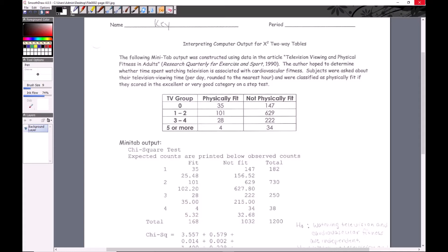What we've got here is some Minitab output using data from an article, 'Television Viewing and Physical Fitness in Adults,' and it's got a citation. The author hopes to determine whether or not time spent watching television is associated with physical fitness. Since this is a two-way table, we're dealing with a chi-square test of independence.